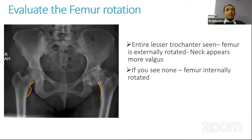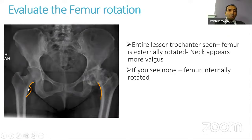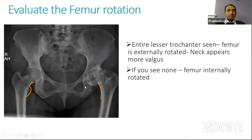Next, we need to look for appropriate positioning of the femur and make sure it is appropriately rotated. Typically, the femur has about 15 degrees of anteversion, so we need the femur neck and head in a profile view. The lesser trochanter is a posteromedial structure — if you're seeing too much of it, the femur is externally rotated. If you're not seeing any, like on the arthritic side in this picture, that means the femur is internally rotated.